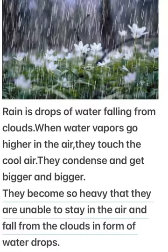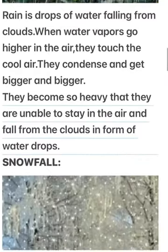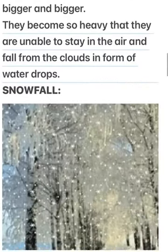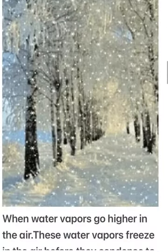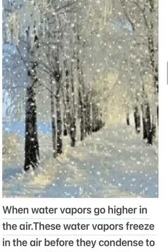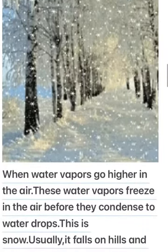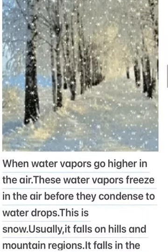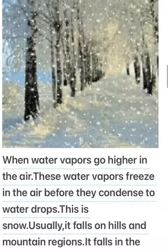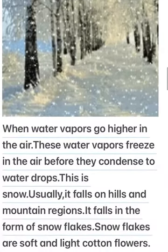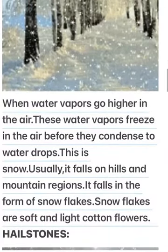Snowfall. When water vapors go higher in the air, these water vapors freeze in the air before they condense to water drops. This is snow. Usually it falls on hills and mountain regions. It falls in the form of snowflakes. Snowflakes are soft and light like cotton flowers.